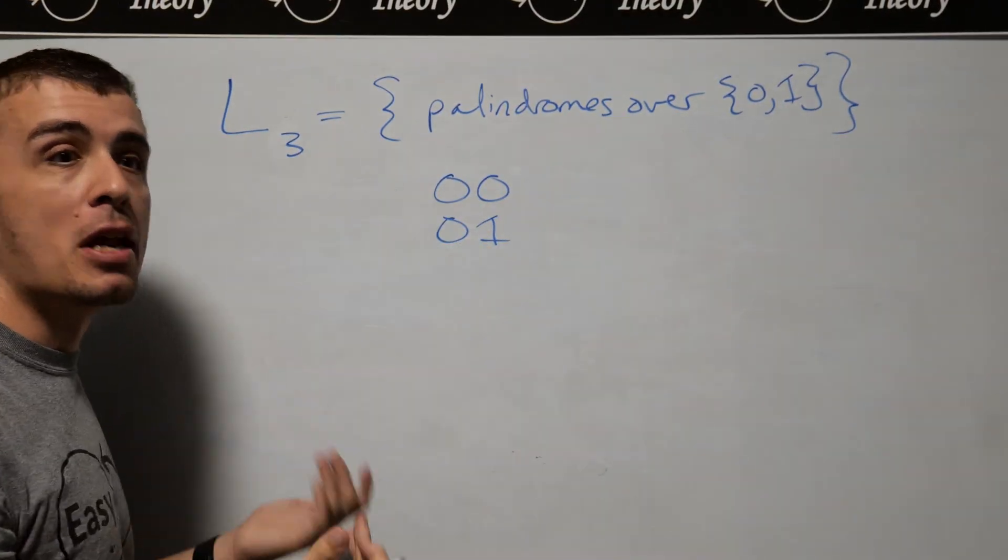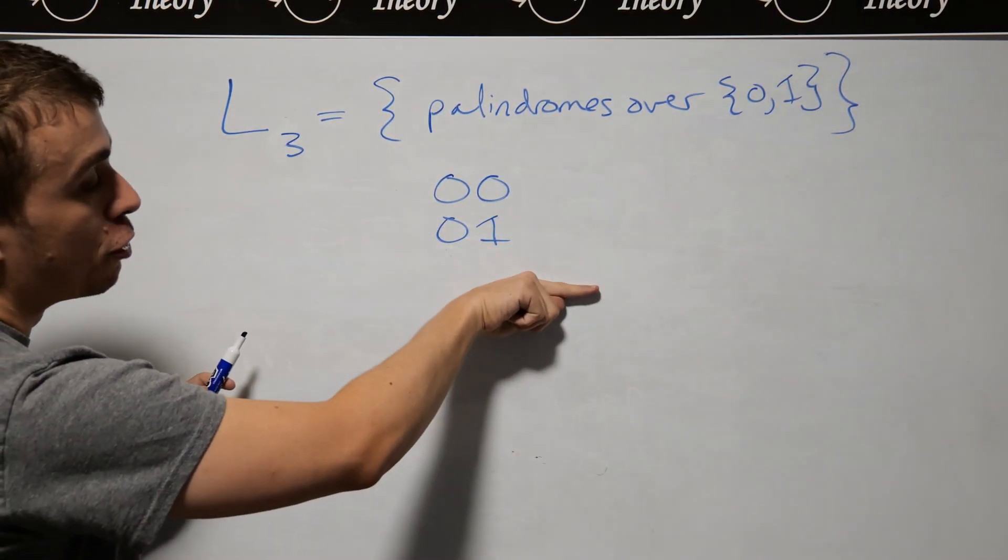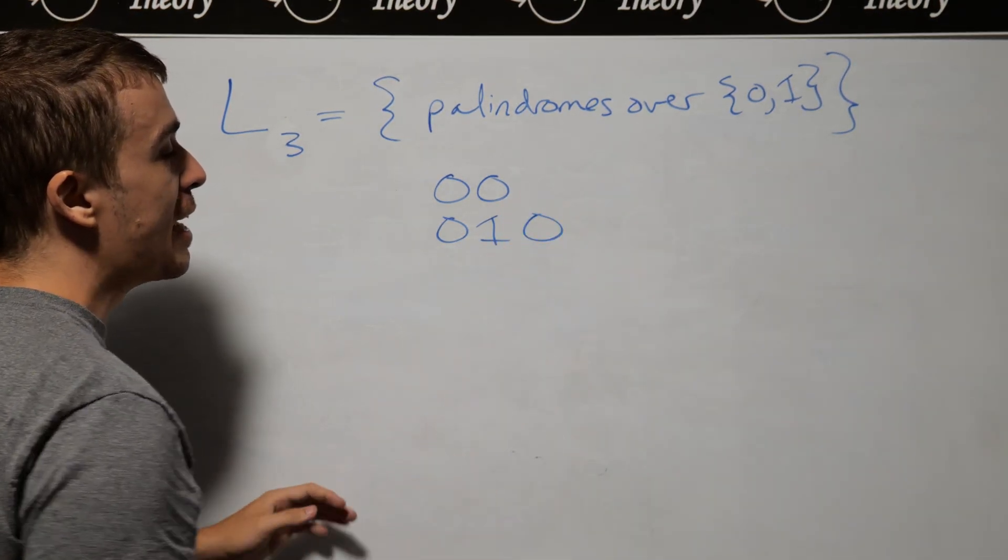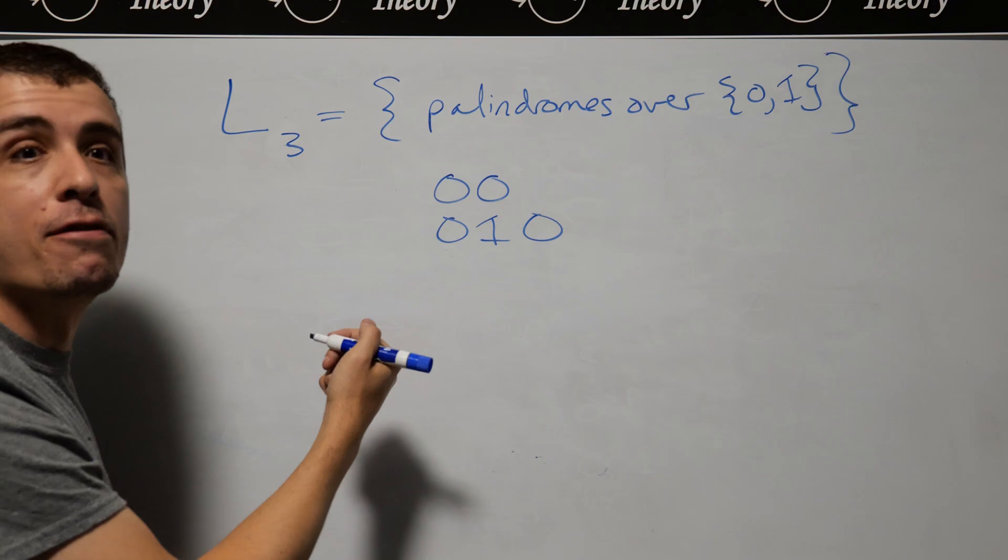If we have the string 01, that's not a palindrome because in this direction it's 01 and in this direction it's 10. But if I add a 0 on the end, now it's exactly the same forwards and backwards.